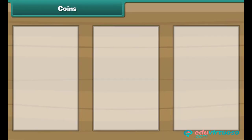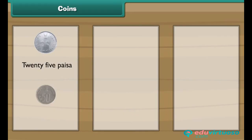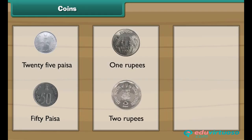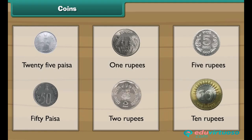Look at this small coin — it is a 25 paisa coin. Look at this slightly bigger coin — it is a 50 paisa coin. This is a 1 rupee coin. This is a 2 rupee coin. This is a 5 rupee coin. This is a 10 rupee coin.